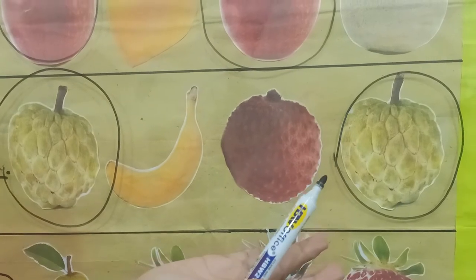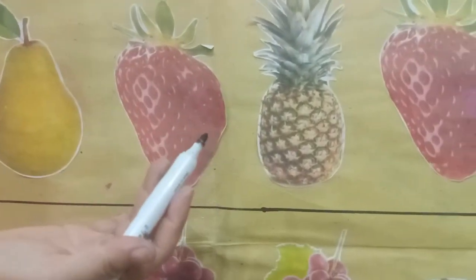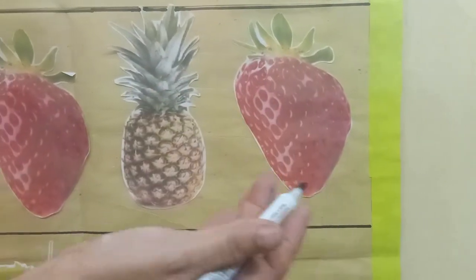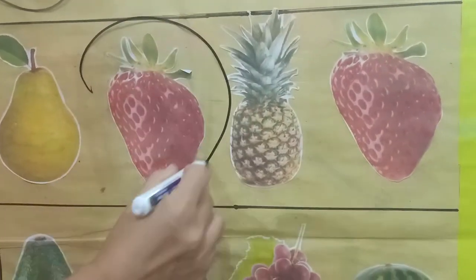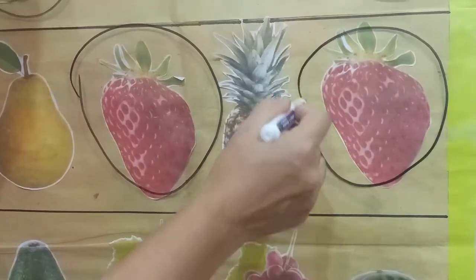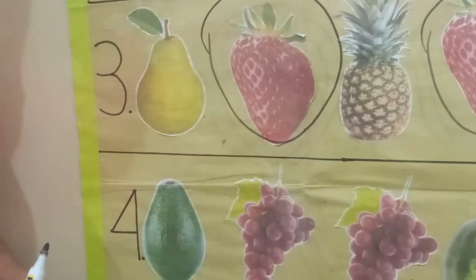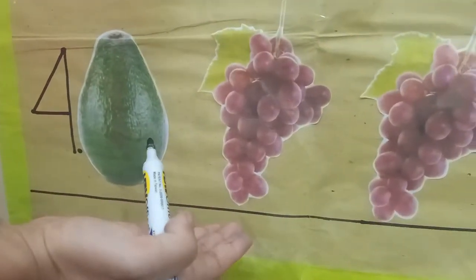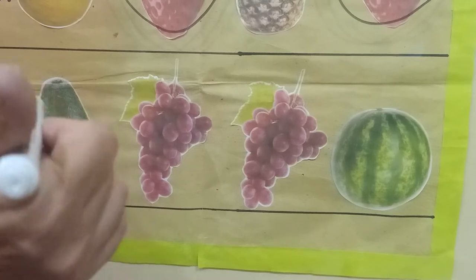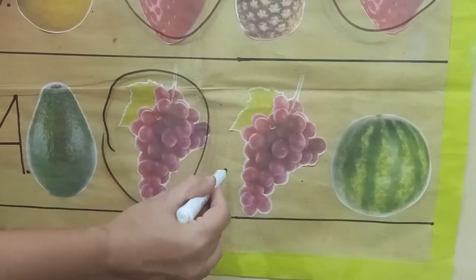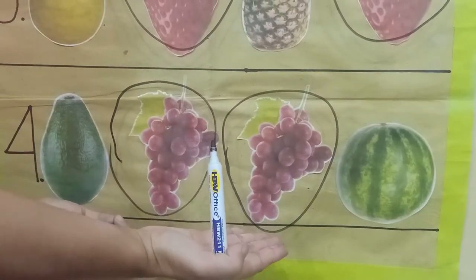Number three: pear, strawberry, pineapple, strawberry. Strawberry and another strawberry — these are alike. Number four: avocado, grapes, grapes, watermelon. Grapes and another grapes — these are alike. Great job, kids!